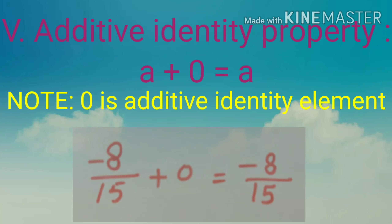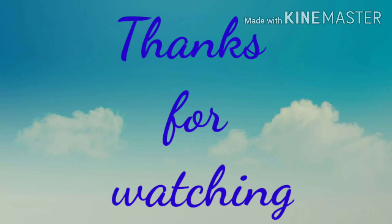So we can say we can use the associative property for addition of rational numbers. The fourth property is the additive inverse property. For example, the additive inverse of 3/7 is −3/7. The sum of 3/7 and −3/7 is 0. So the additive inverse property states that the sum of a number and its additive inverse is 0. Symbolically, a plus (−a) equals 0.